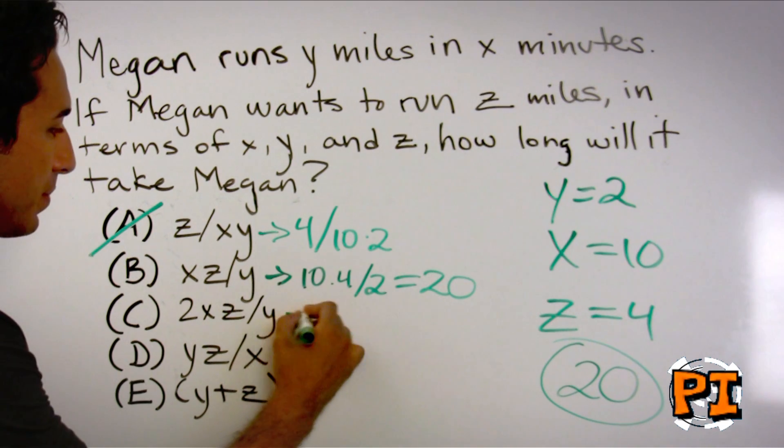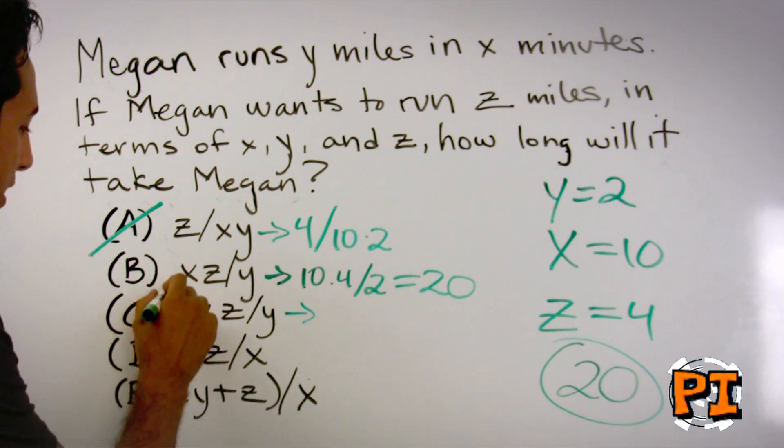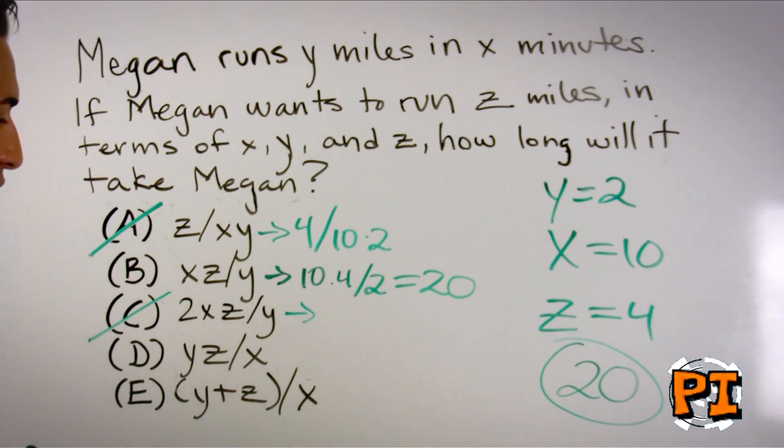If we look at C, put in those numbers, that does not equal 20. D does not equal 20. E also does not equal 20. We're left with B as our only remaining answer choice. It takes Megan 20 minutes to run 4 miles and we move on.